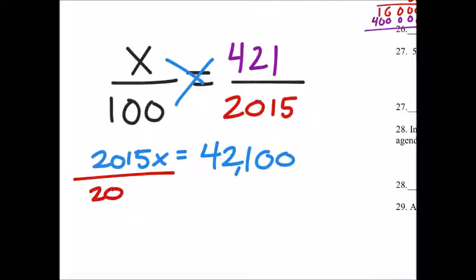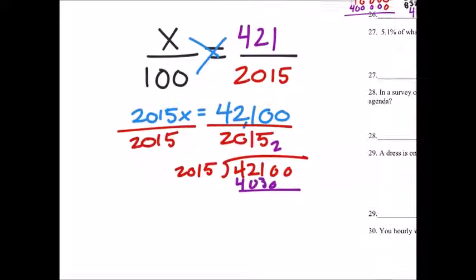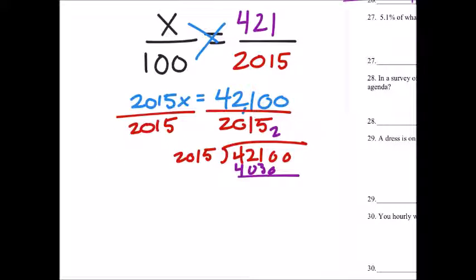And we'll divide both sides by 2015. Another big number. 2100, 2015 looks like we'll go in there twice, 4030. I need more space. Minus zero zero, need to borrow.